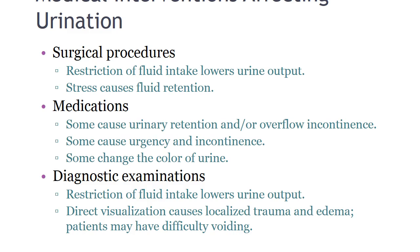Many medications directly or indirectly contribute to urinary dysfunction. Antipsychotics, antidepressants, alpha-adrenergic agonists, and calcium channel blockers can cause urinary retention. Some medications change the color of urine; for example, pyridium — used for urinary tract infections — will change urine to a bright orange or rust color. Cancer chemotherapy drugs can also color the urine and are often toxic. People with impaired kidney function require dosage adjustments for medications excreted by the kidneys.